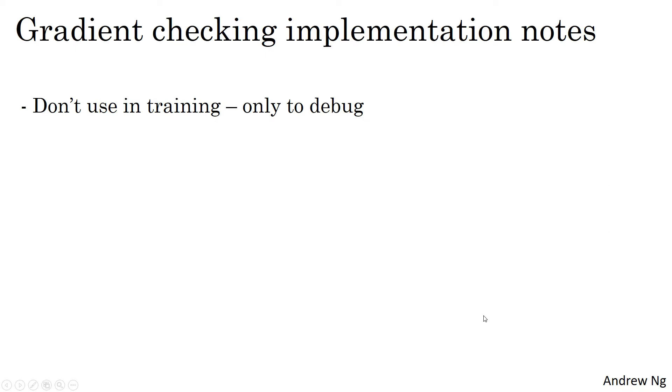First, don't use grad checking in training, only to debug. What I mean is that computing d theta approx i for all the values of i is a very slow computation. So to implement gradient descent, you should use backprop to compute d theta and just use backprop to compute the derivative. It's only when you're debugging that you would compute this to make sure it's close to d theta. But once you've done that, then you would turn off the grad check and don't run this during every iteration of gradient descent because that's just much too slow.